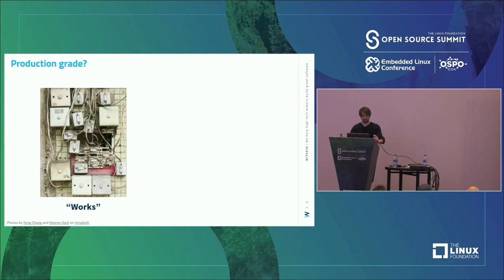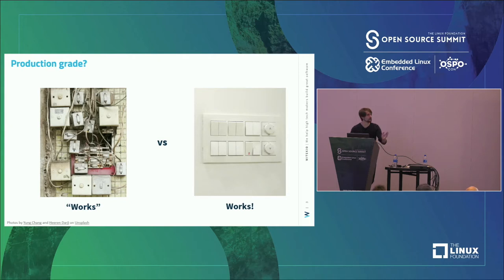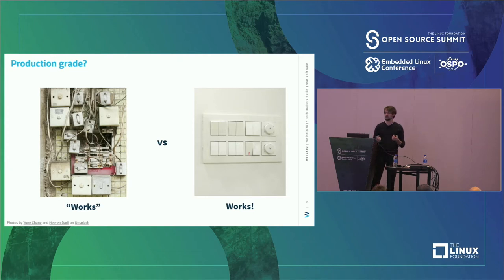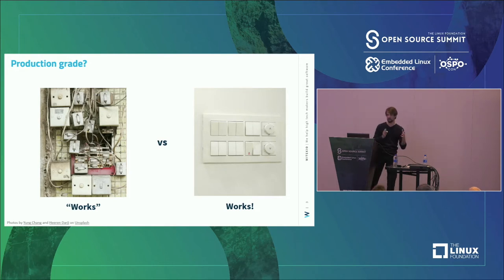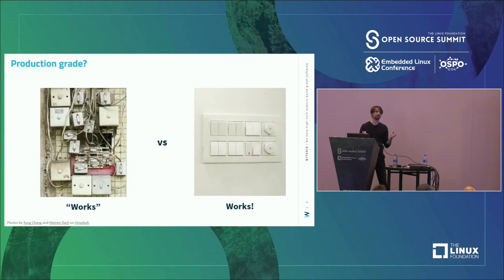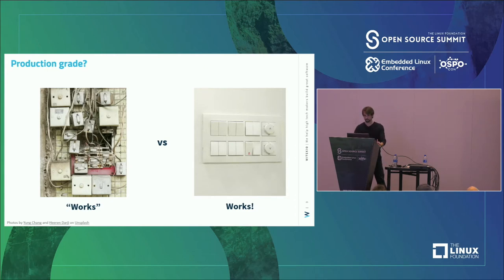The idea here is to define the difference between a rough solution and a polished one. Both might work, but the one on the left is going to be harder to maintain and probably not super safe. These criteria — these attributes — are what we're going to look at, and how to go from that left-side solution to the right, providing a checklist for designing a production-ready product.